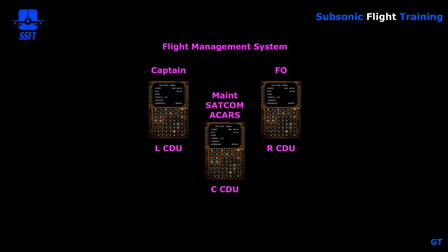We have three CDUs or control display units. Sometimes these are referred to as FMS CDUs, flight management system control display units, or CDU for short — control display unit. We have a left, a center, and a right CDU.